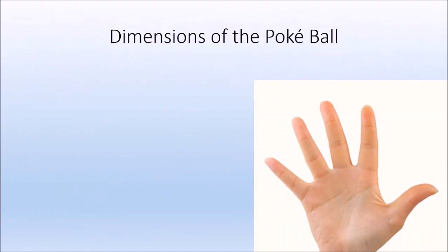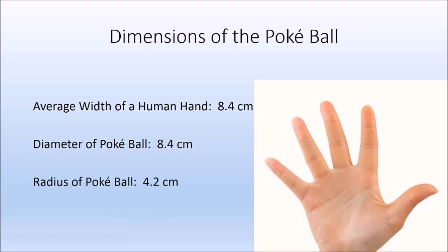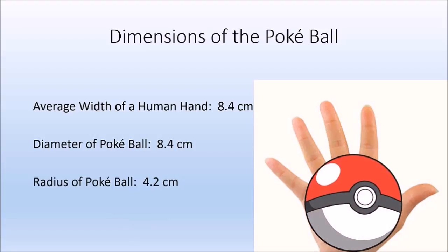Let's start with the dimensions of the Pokéball. Because I couldn't find an actual approximation for the size of a Pokéball, I assume the diameter is roughly the size of a human hand, since it fits in your hand. The average width of a human hand is roughly 8.4 centimeters, so we'll assume the diameter of a Pokéball is 8.4 centimeters and the radius is 4.2 centimeters.